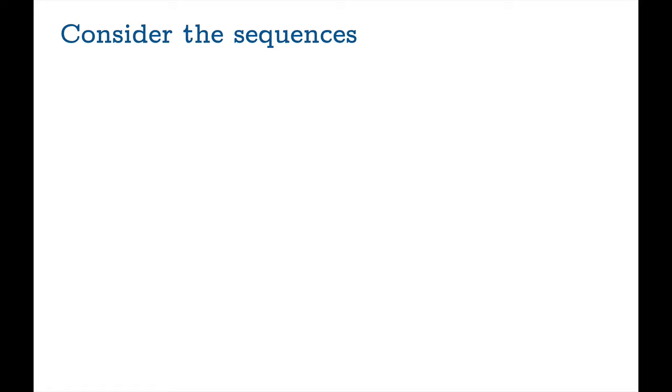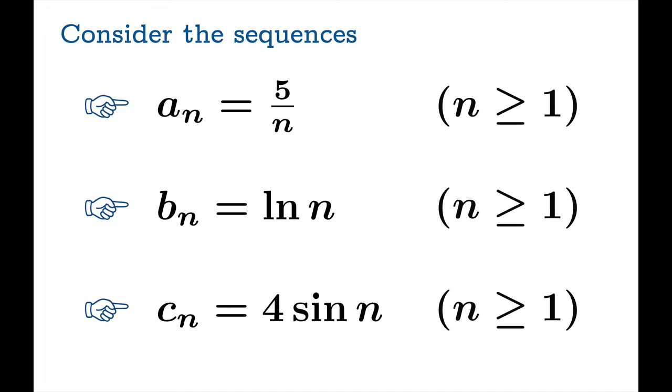So here are three sequences that we'd like to get a handle on. There's 5 over n, ln of n, and 4 sine n. We're going to use the same domain for each of these, which is going to be the set of natural numbers or the integers n greater than or equal to 1.